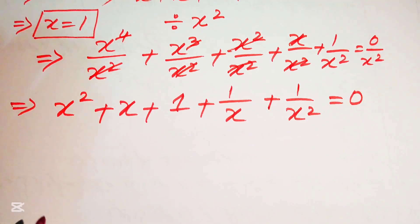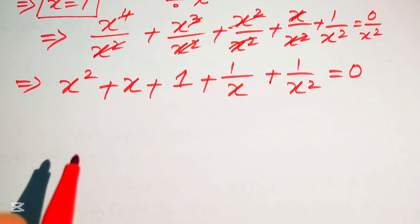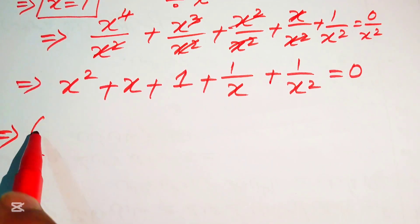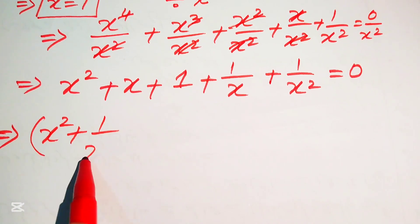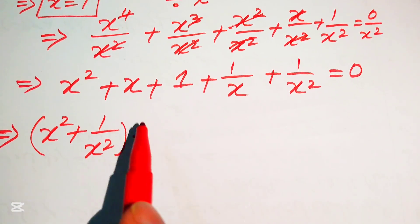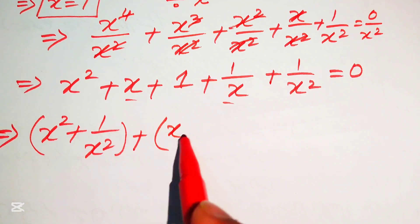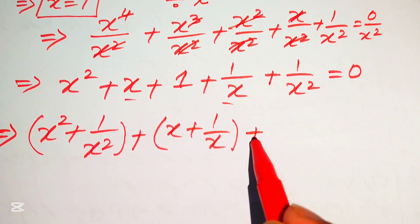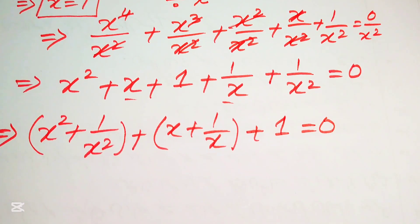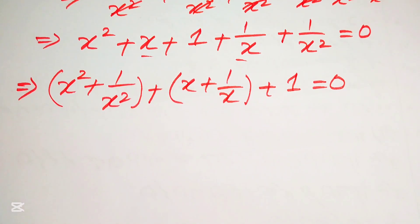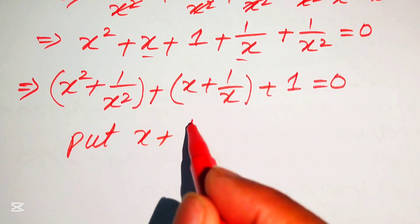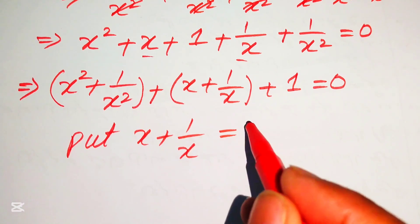We group the terms into pairs: x squared plus 1 over x squared, plus x plus 1 over x, plus 1 equals 0. We make the substitution x plus 1 over x equals y.